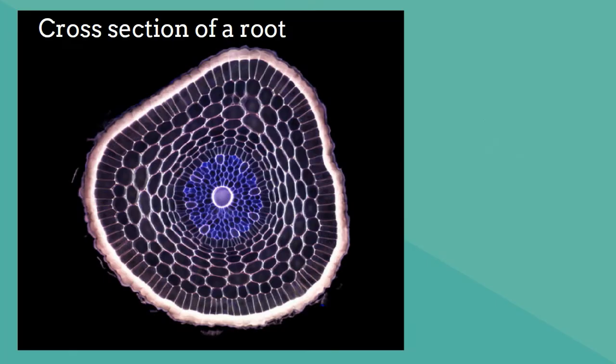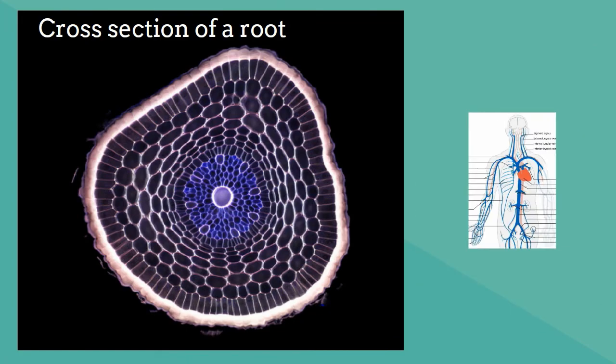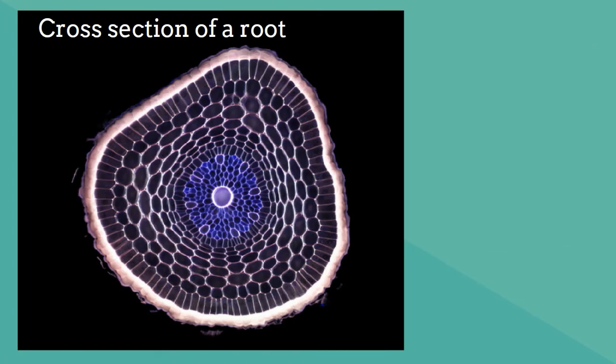In the middle of the root are vascular tissues. Vascular tissues are transportation, kind of like the veins and arteries inside of us. There are two main types. First, xylem transports water from the root to the rest of the plant.